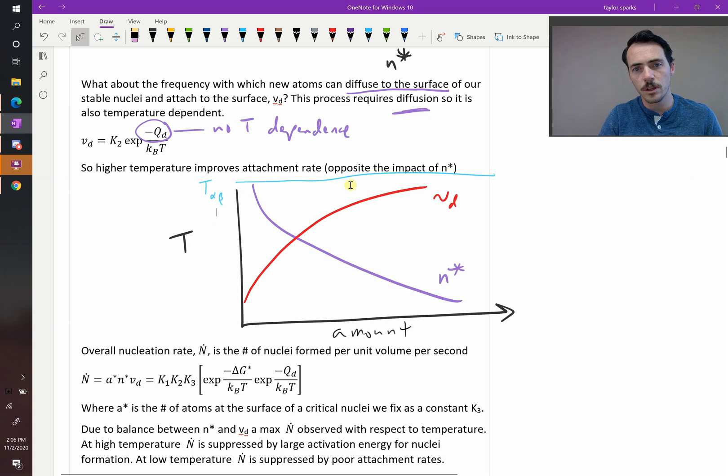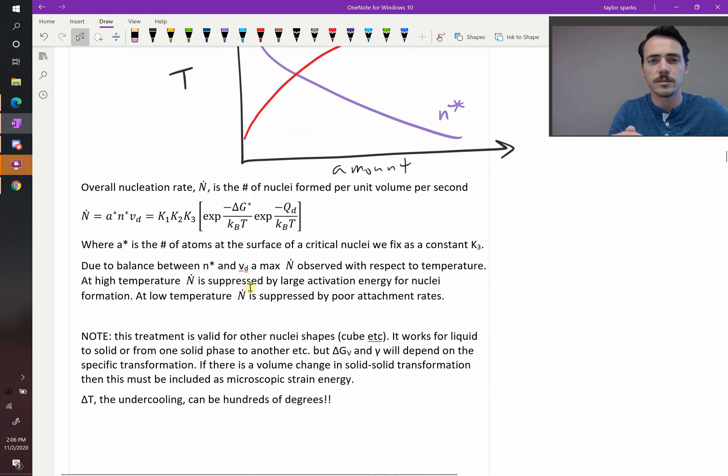At temperatures just below the surface, you're not going to have very many nuclei, but the attachment rate will be really fast. And at temperatures really far below, at supercooled, you could have lots and lots of stable nuclei, but they're going to attach really slowly. Therefore, the overall nucleation rate, this is capital N-dot, that's going to be the number of nuclei formed per unit volume per second.